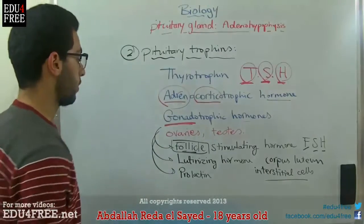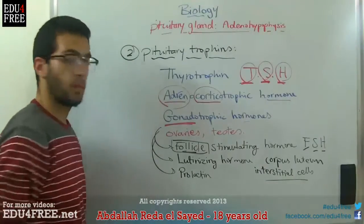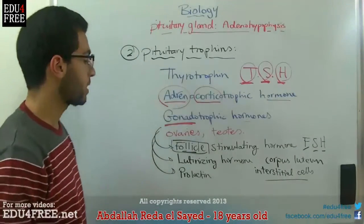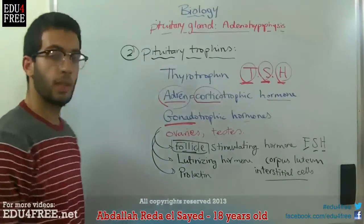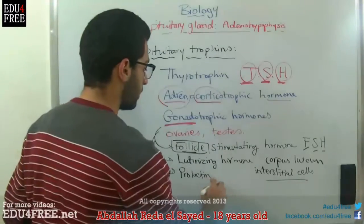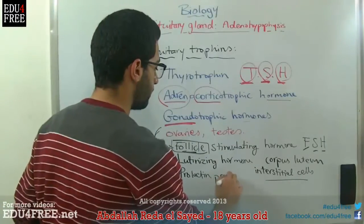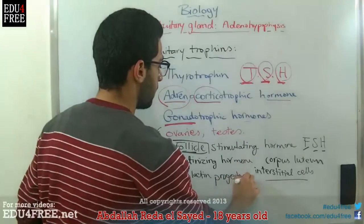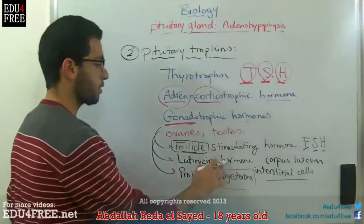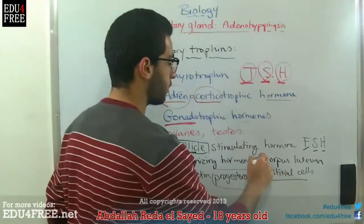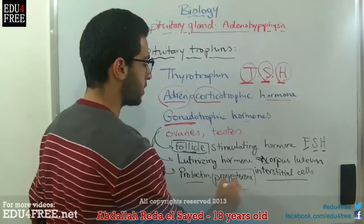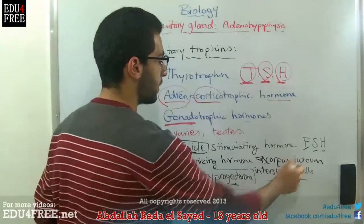We also have the prolactin hormone. Prolactin stimulates the secretion of the mammary gland and breasts in females. It also stimulates the secretion of progesterone hormone from the corpus luteum. So first, the luteinizing hormone helps in the formation of the corpus luteum, and then prolactin stimulates the secretion of progesterone from the corpus luteum.